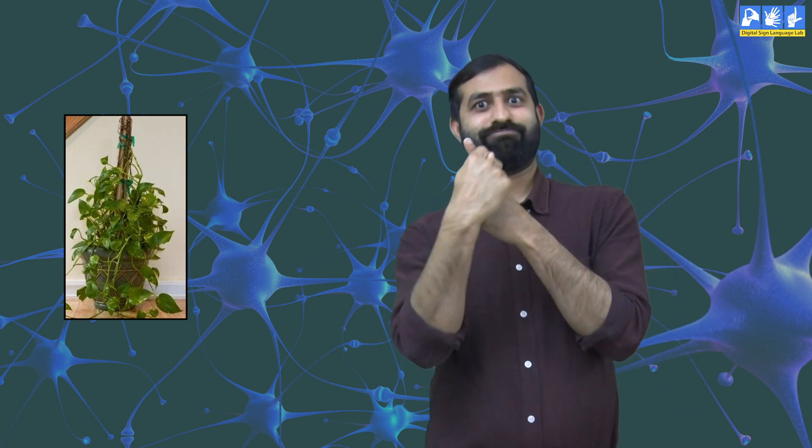How do climber plants climb? Tendril is a thread-like specialized stem, leaf or petiole used by climbing plants for support and attachment. Tendrils need support to climb. When the tendrils touch any object, they twirl around the object faster than the part which has not touched any object. This is the movement in plants.